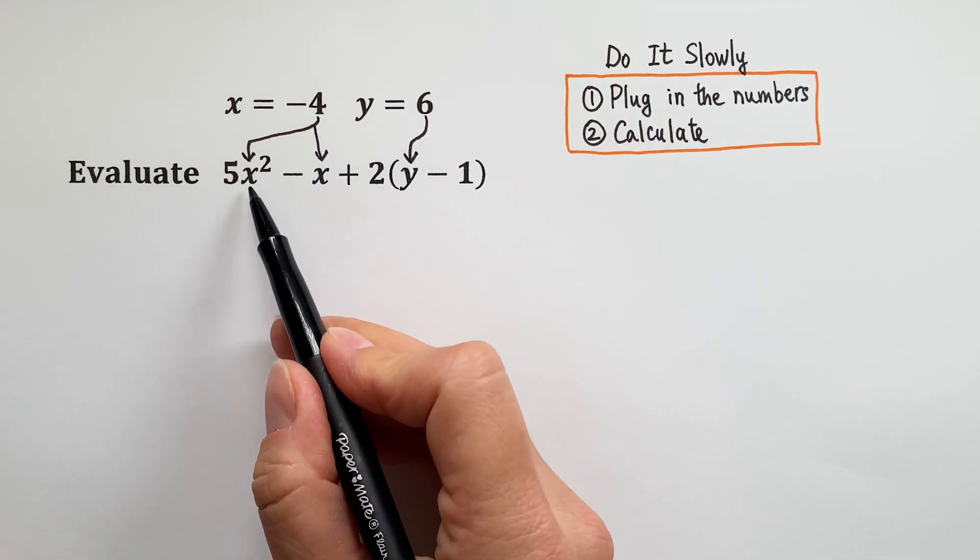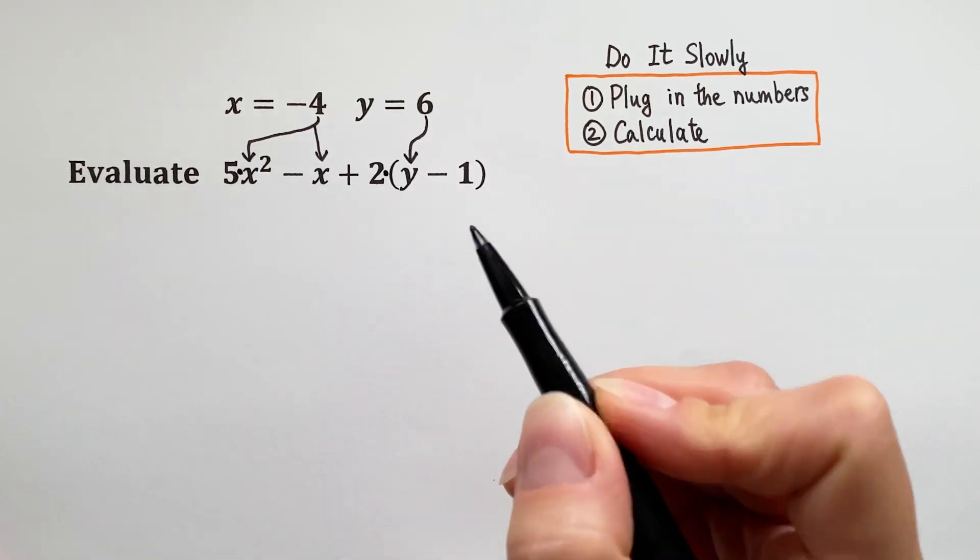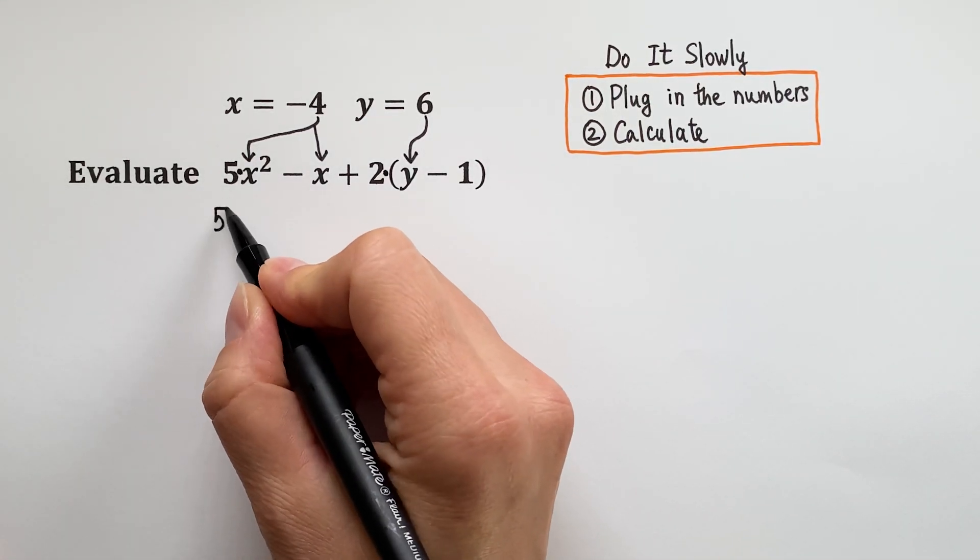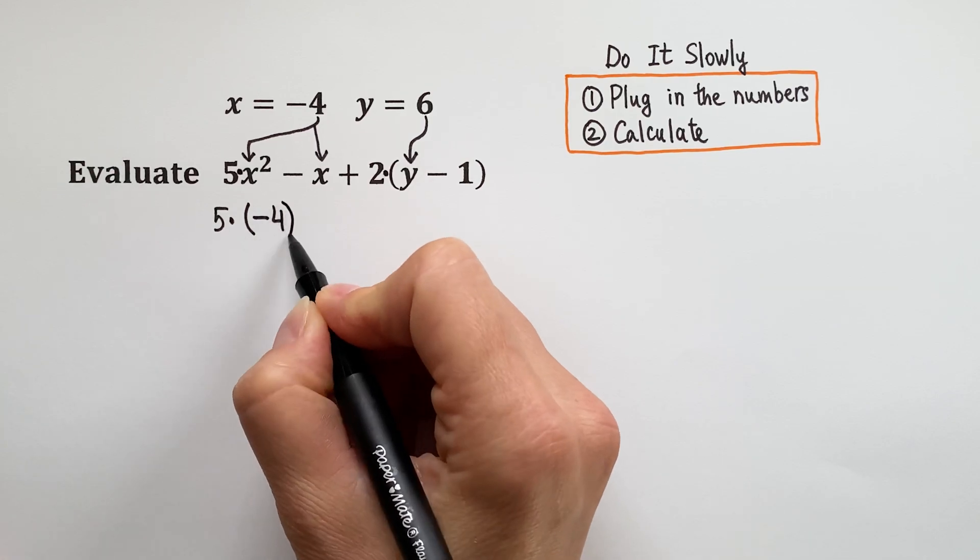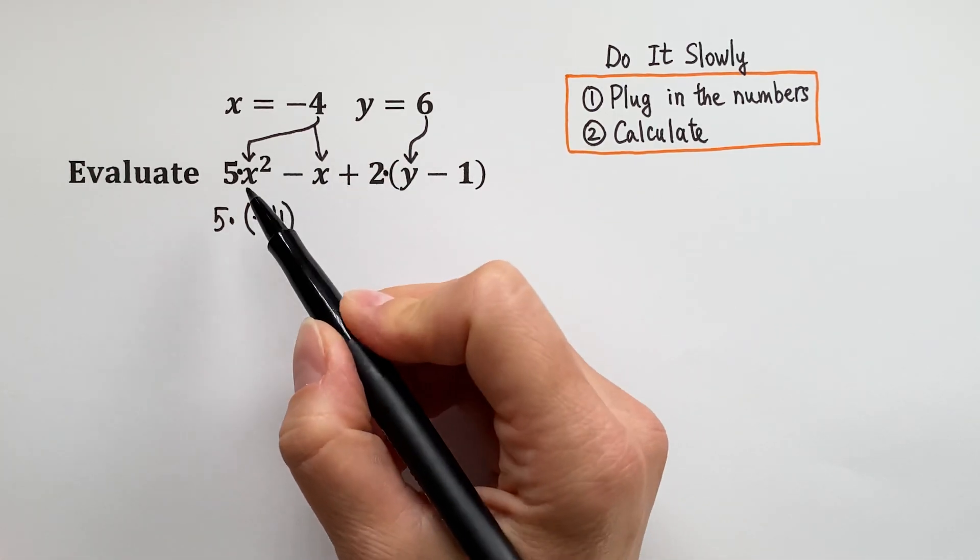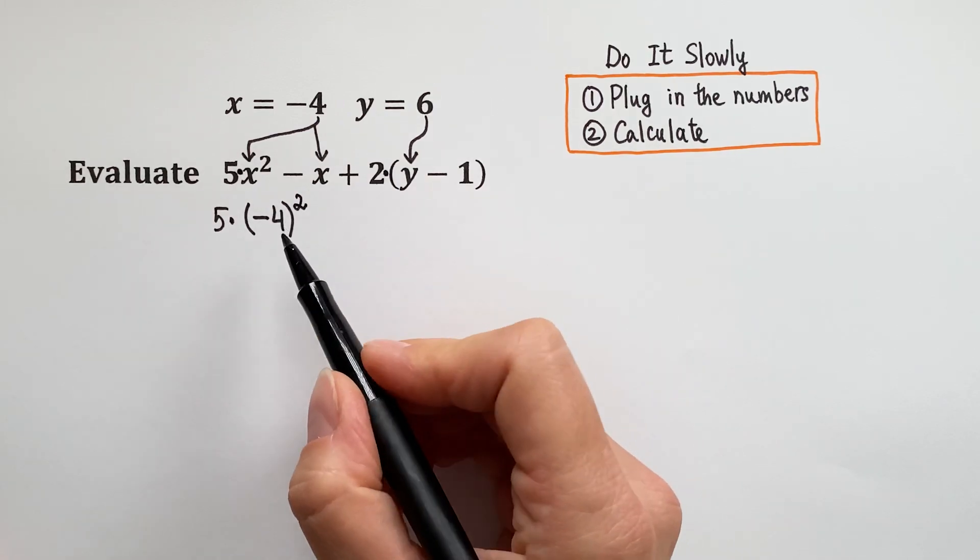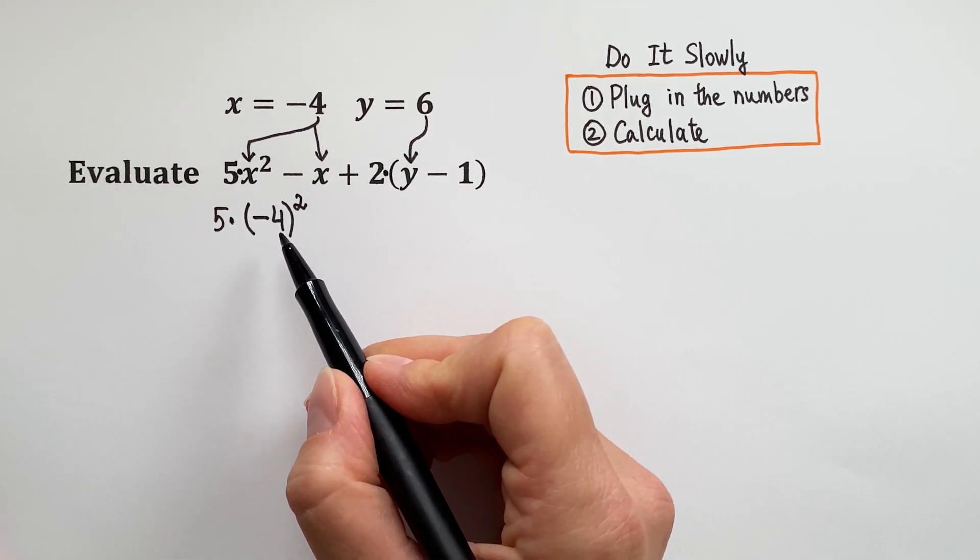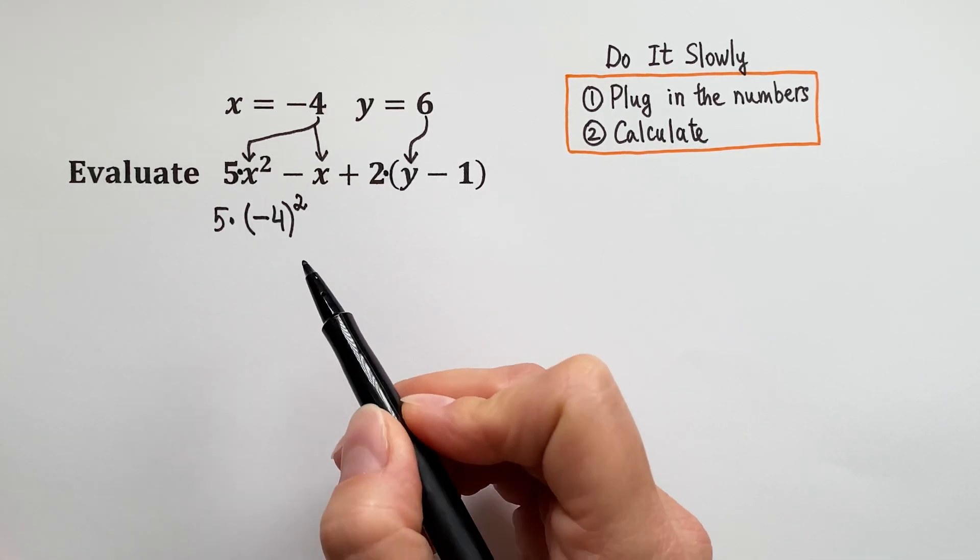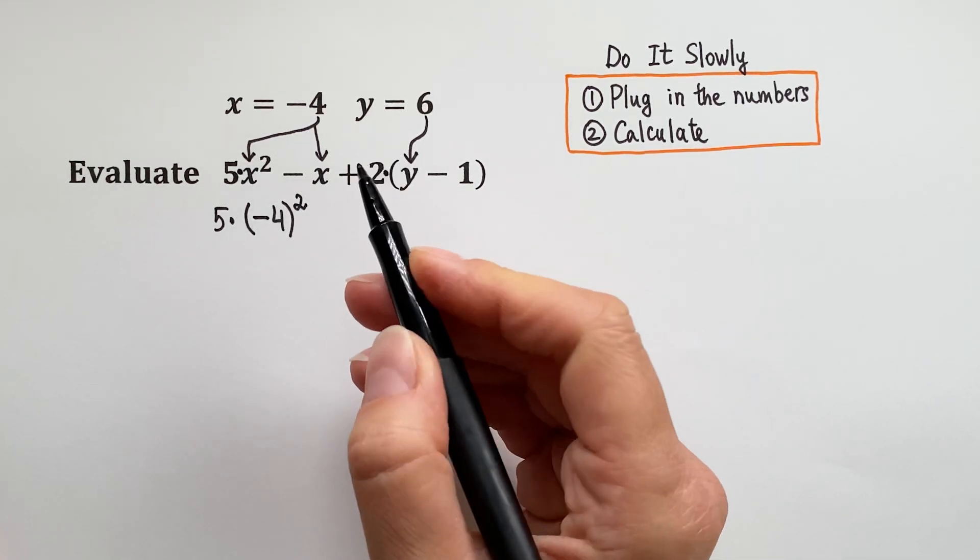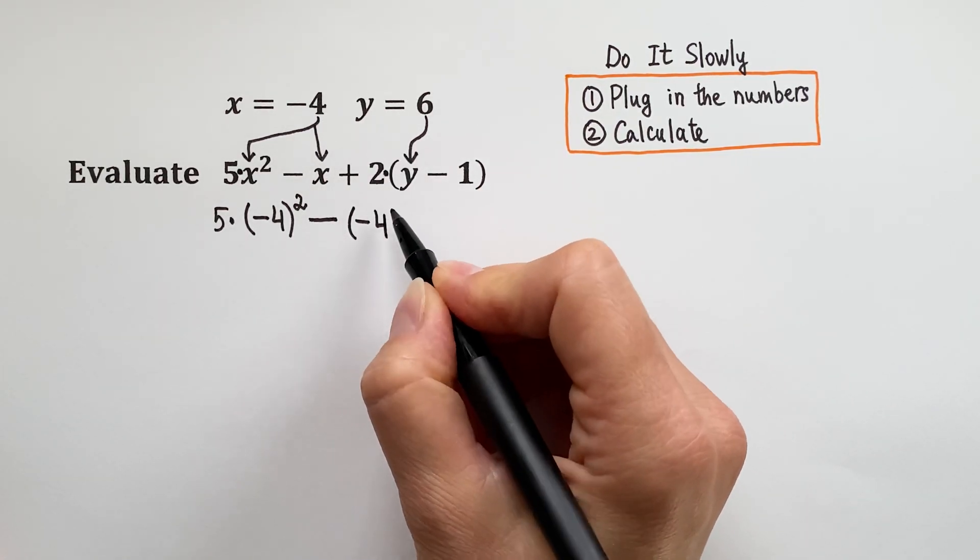When you see numbers and variables so close together, it means there is multiplication between them. Now let's plug in our numbers. 5 times our 4 came with a negative sign, so be sure you use parentheses when you plug in negative numbers. x here is raised to the second power, so we are raising negative 4 to the second power. If you don't use parentheses, you may accidentally raise only 4 to the second power and forget about the negative, so be careful. Minus here came from the expression, so rewrite it, and then put negative 4 where x is.